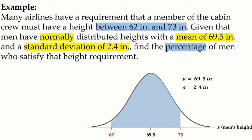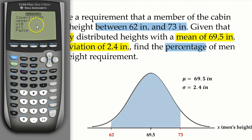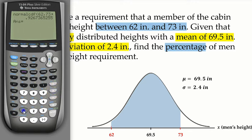For a problem like this we're going to use normal CDF. We go to 2nd, Vars, and select normal CDF, which is the second function. The lower bound is the lowest value in the shaded region — 62 inches. The upper bound is the rightmost point — 73 inches. The mean is 69.5 and the standard deviation is 2.4. We go down to paste and enter. The question asks for a percentage, so we multiply by 100, and our answer is 92.7.